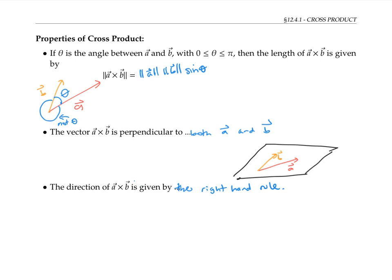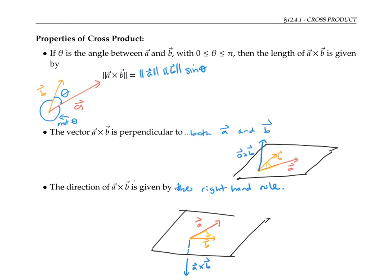What I mean by the right-hand rule is: arrange the two vectors so they share an initial point, put the palm of your right hand at that common initial point, point the fingers of your right hand in the direction of a, and then curl your fingers towards the direction of b. Whatever direction your thumb ends up pointing is the direction of a cross b. So in one arrangement, a cross b points up out of the plane; with a different arrangement, your thumb ends up pointing down, so a cross b points in that direction instead.